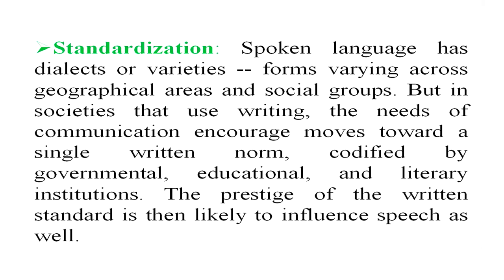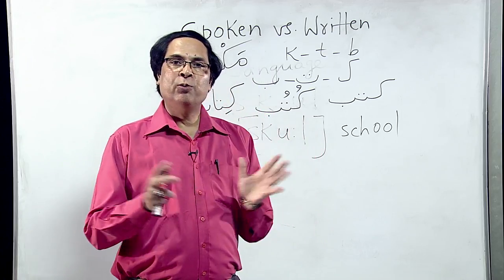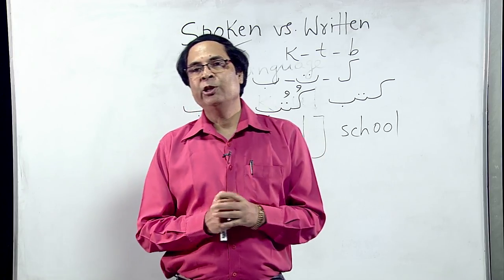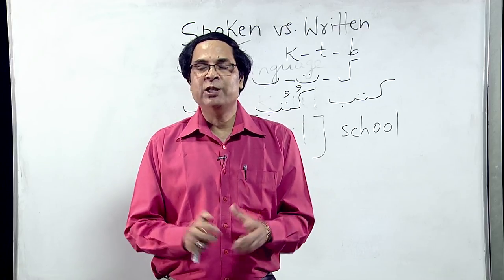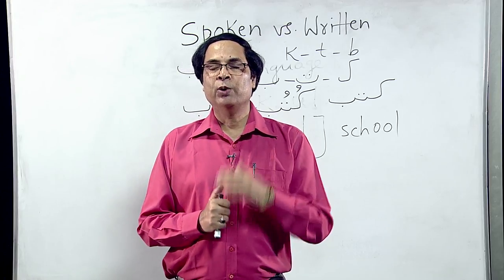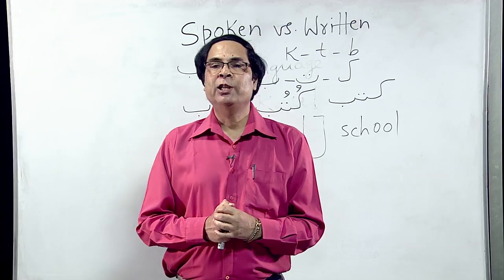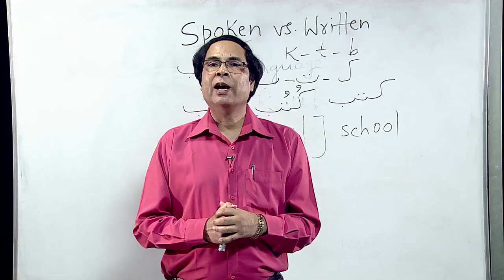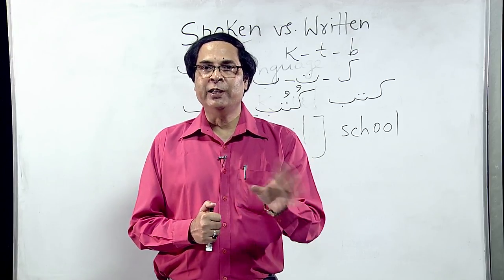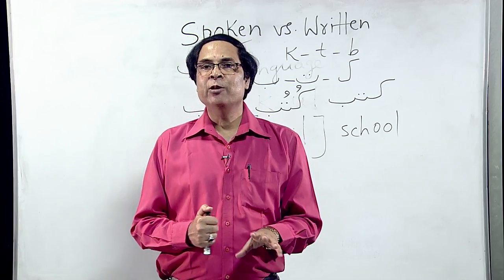The next difference is Standardization. Spoken language has dialects or varieties, with forms varying across geographical areas and social groups. In societies that use writing, the needs of communication encourage moves towards a single written norm, codified by governmental, educational, and literary institutions. For example, in Bihar, people say 'hum khaya' rather than 'maine khana khaya,' and in Punjab, Punjabi speakers' Hindi may reflect tonal features of Punjabi, such as voiced aspirates becoming voiceless unaspirated — so 'bhai' might be pronounced as 'pi.'